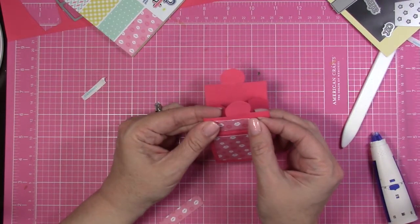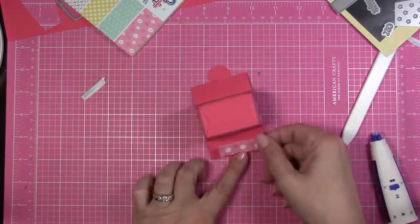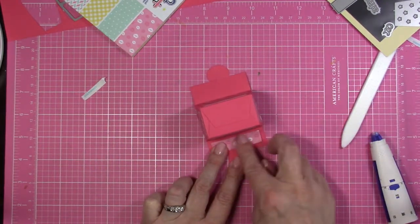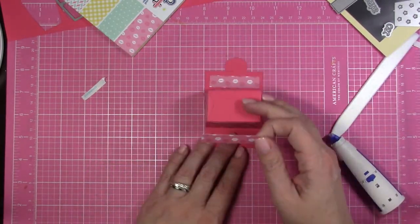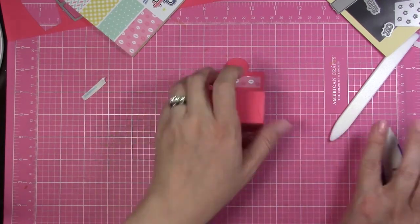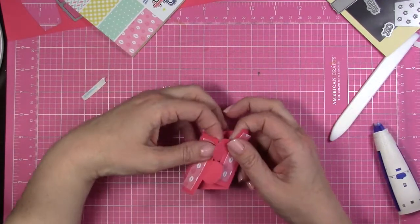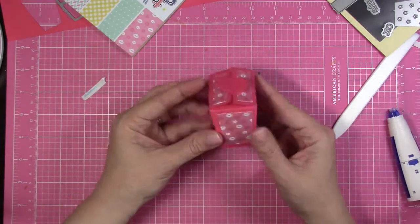I literally was filming this kind of going along, creating the box as I was filming. So the flaps come out so you really could just do it this way as well. So just put your paper on there. You could also do this reverse where you cut the box pattern out of pattern paper, then you use some solid cardstock to decorate it with.